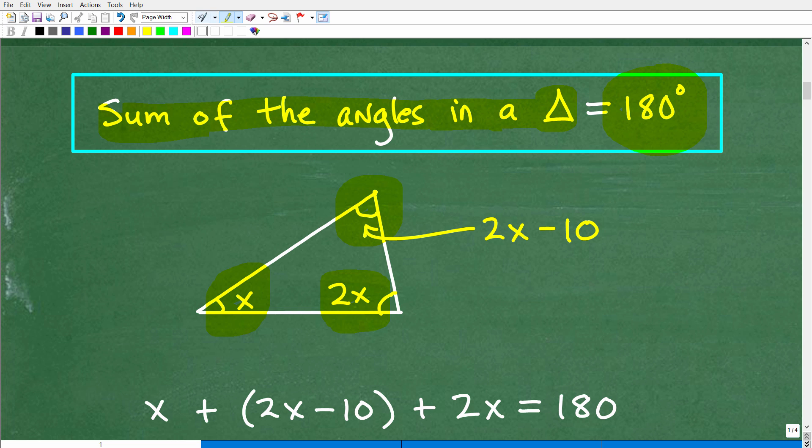So with that being said, we can actually create a nice, lovely equation. So I can use algebra to solve this problem. I'm going to take this angle. I'm going to add it to this angle. And then I'm going to add it to this angle. And I'm going to set all that equal to 180 degrees. And, of course, you can see this is what I have right here. I have this nice, lovely equation.